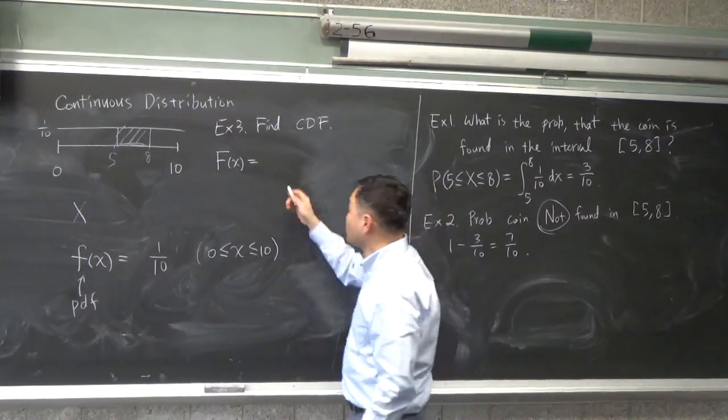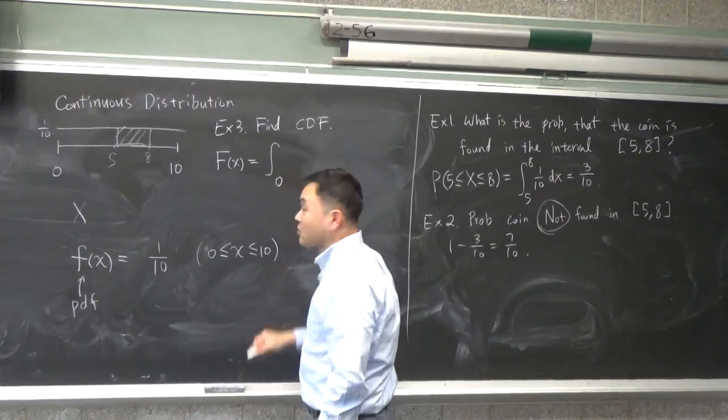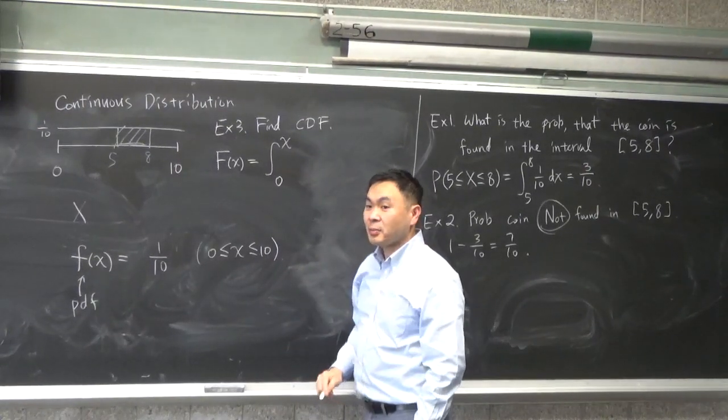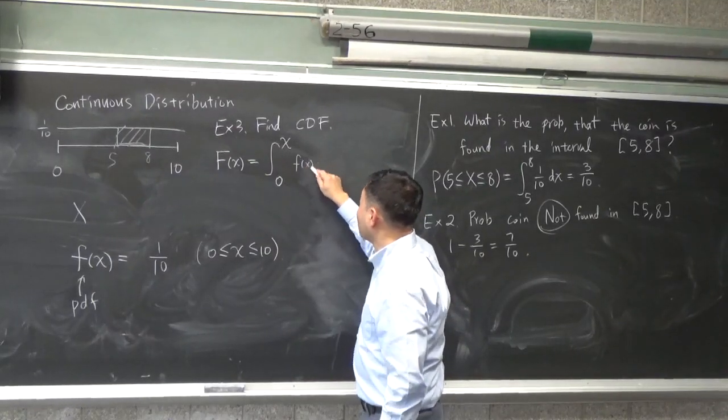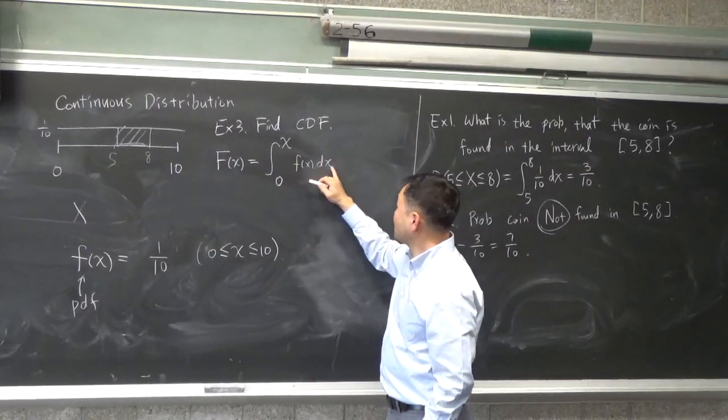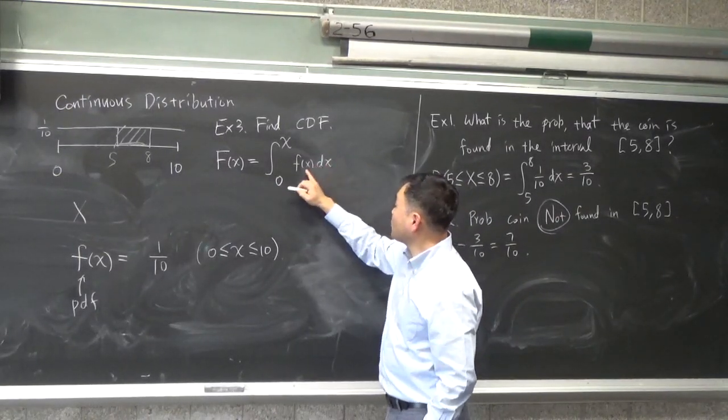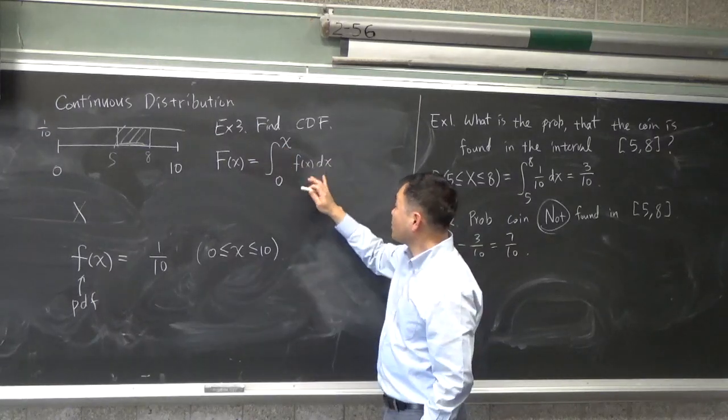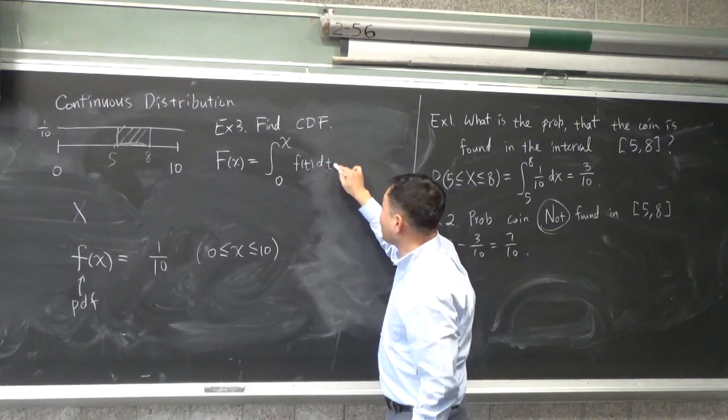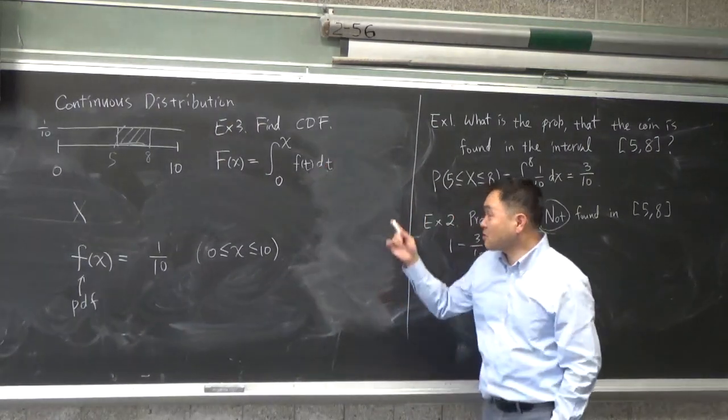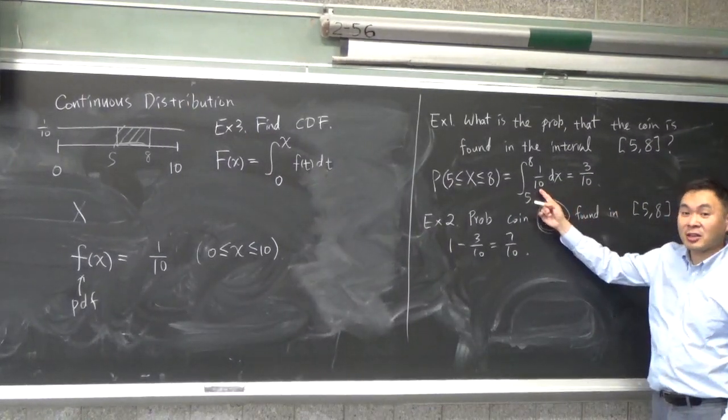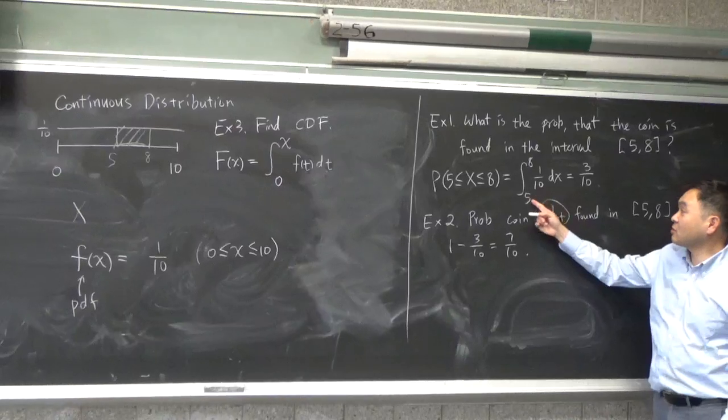And, by definition, what it is, is you start from the left end point, which is zero, and you integrate until x. All of this f(x), and you do the integral. Now, some of you might not be okay with this because you're using x for the integral, and then you're putting x here. So, a good idea is to, instead of using x's, use t or y or whatever. Just choose something else. But, basically, the idea is exactly what we're doing here. You're integrating f(x) dx from some interval.